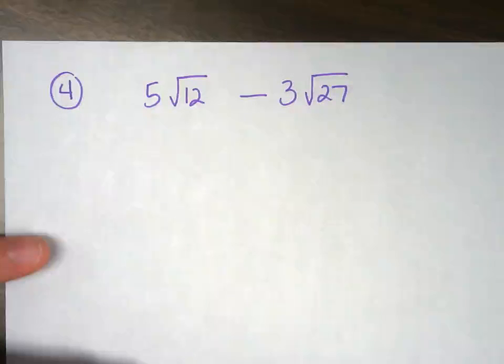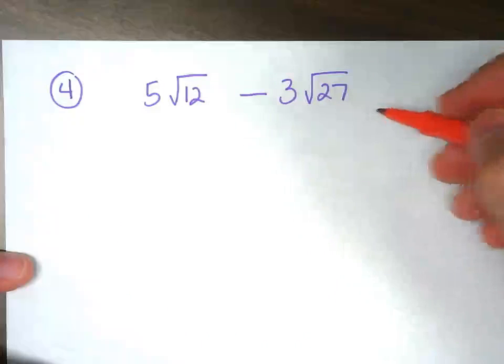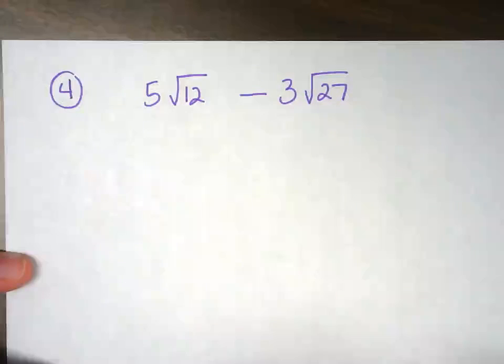Notice just another subtraction problem following the steps that we followed for the addition problem. We're just going to be subtracting at the end. So we need to break down, first off, we have 12 and 27. Those are not the same, so we need to break them down.